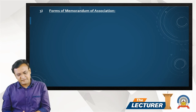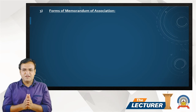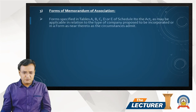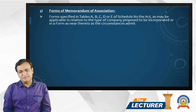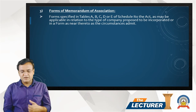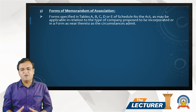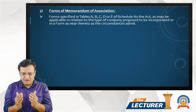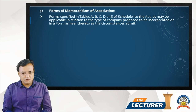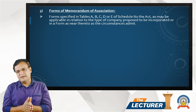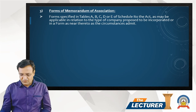Next, the forms of the memorandum of association. The Companies Act 2013 provides various forms for various types of companies. These forms are specified in Tables A, B, C, D, or E of Schedule One to the Act. A company's memorandum shall be in the applicable format depending on the type of company.